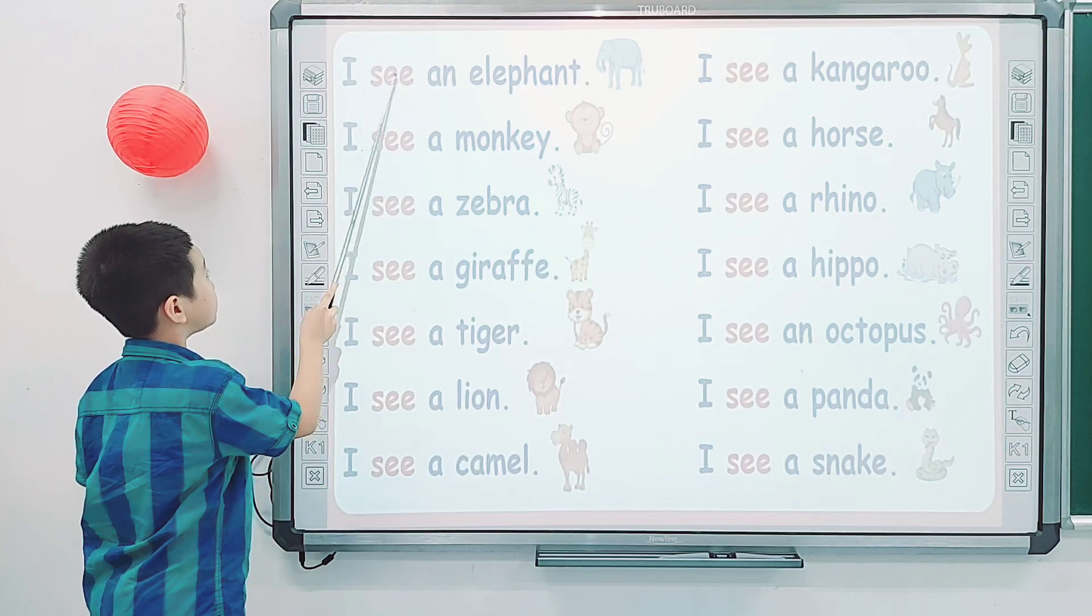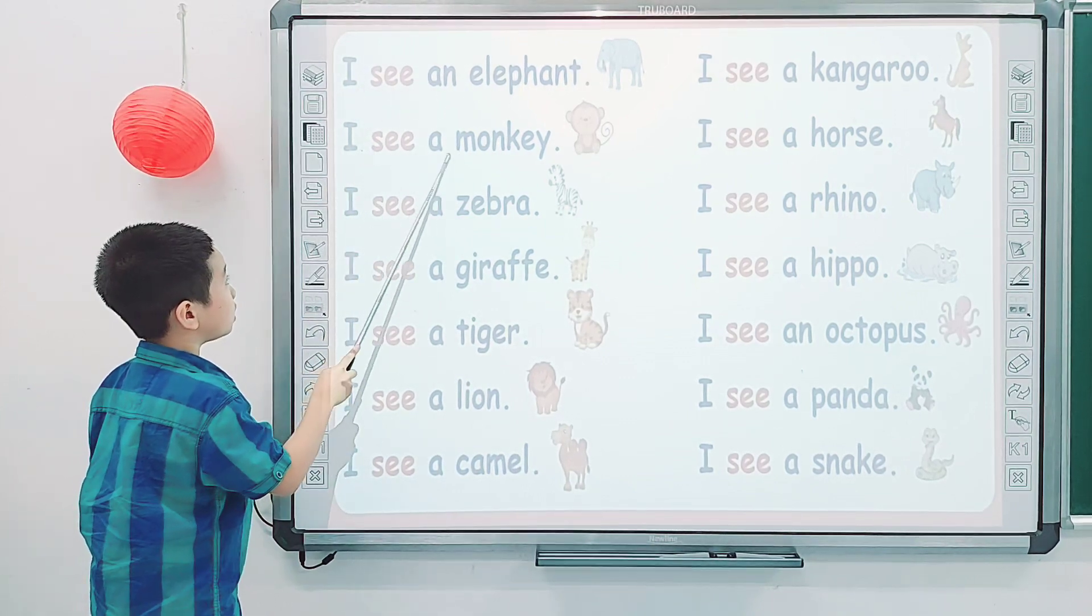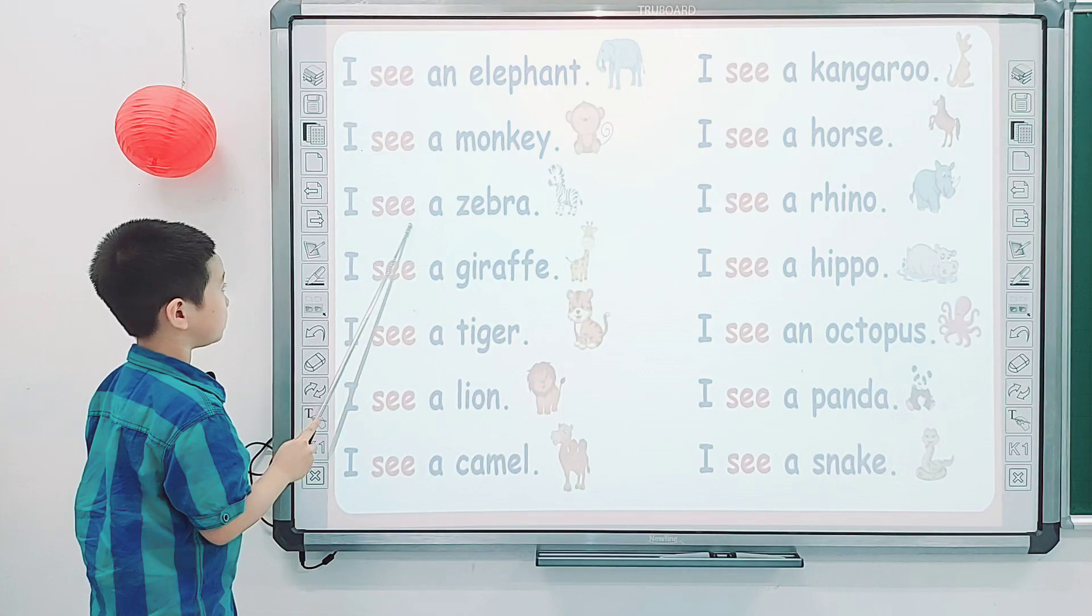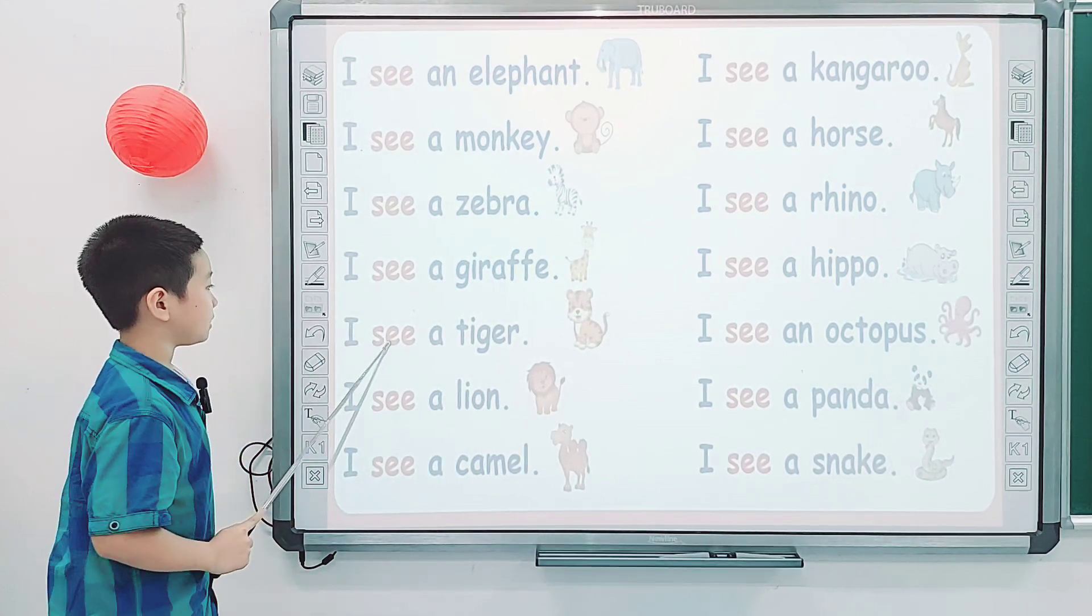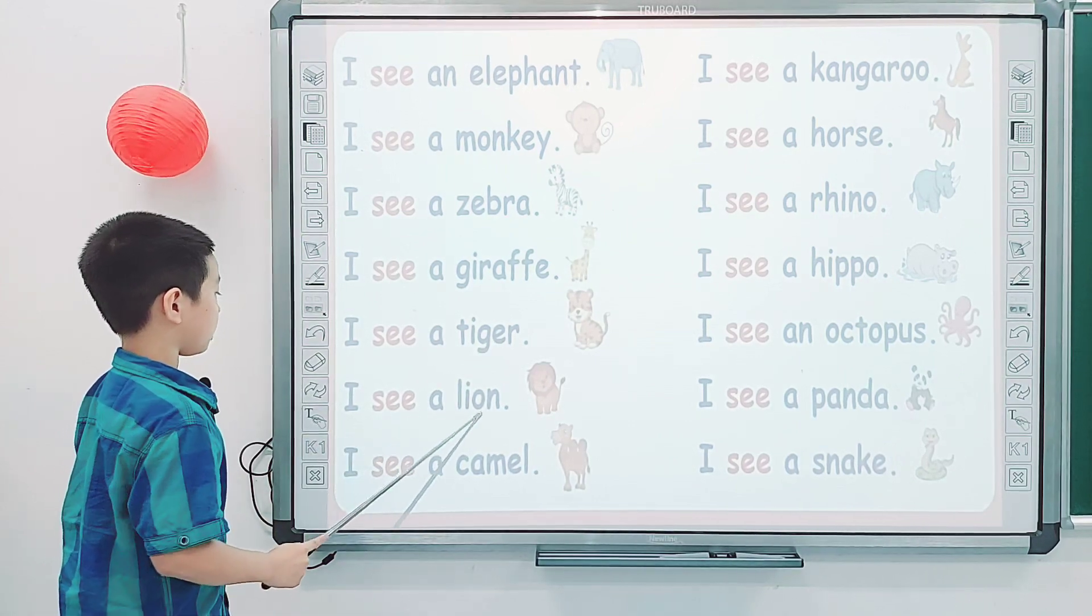I see an elephant. I see a monkey. I see a zebra. I see a giraffe. I see a tiger. I see a lion.